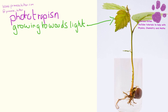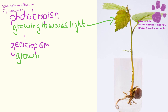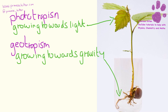This growing upwards, or growing downwards as the roots will do, is called geotropism, and this is growing towards gravity. This is what the roots are going to do. Just like the roots are going to grow towards gravity, they're also going to grow away from the light. And the shoots are going to go towards the light and away from gravity.